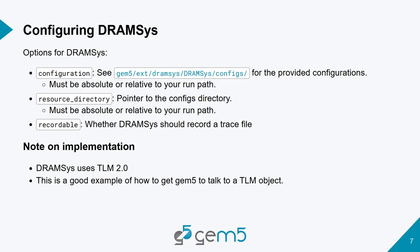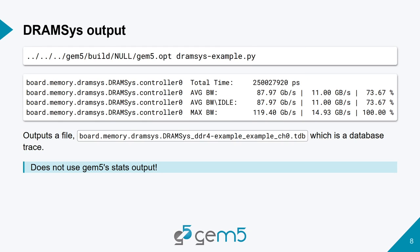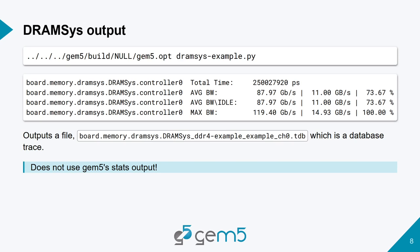TLM stands for transaction-level modeling — it's a transaction-level protocol from the SystemC specification. If you run the example from the materials folder, you get results out of GEM5. One thing to note is that the results from DRAMSys are just printed to the screen — there are no DRAMSys results in the GEM5 stats file. It also outputs a database file which is a trace of everything that went into DRAMSys.